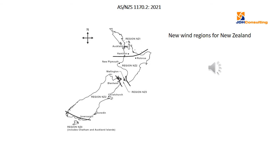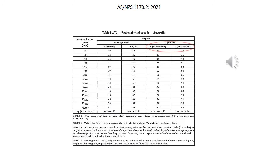New Zealanders have also done a lot of reanalysis of their recorded wind speeds, resulting in new regional boundaries for New Zealand. The main change is at the south of the South Island, where a new strip at the tip — Region NZ4 — includes the Chatham and Auckland Islands, where wind speeds were found to be higher than previously thought. There are probably more changes in New Zealand than in Australia, including changes to actual wind speeds and direction multipliers.